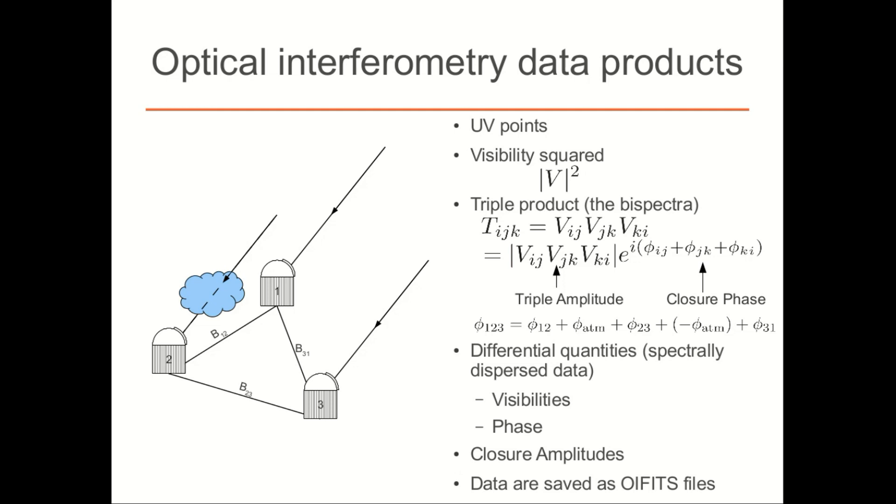So instead of observing complex visibilities, the calibratable quantity is actually the visibility squared, which is just simply the modulus squared of the complex visibility. The one interesting product, an additional interesting product that we can form is called the triple product, also known as the bispectrum. And this is just simply the multiplication of three complex visibilities around a closed triangle of telescopes. So from this, we get a quantity called the triple amplitude, and then also the closure phase. And the closure phase is a very interesting quantity because it can actually cancel out some of the atmospheric phase information.